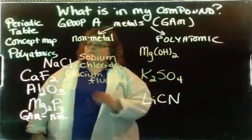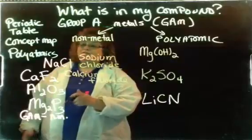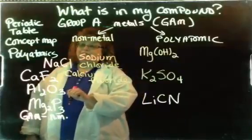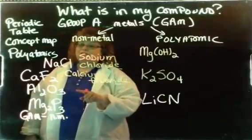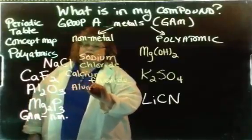Any compound that has aluminum in it usually gets incorrect, students do, because they forget that that's a group A metal, even though it sits by the metalloids. So because it's a group A metal, you're going to name that metal aluminum.